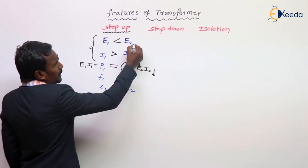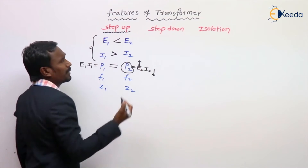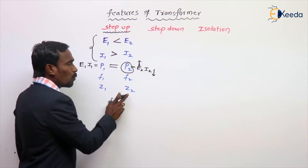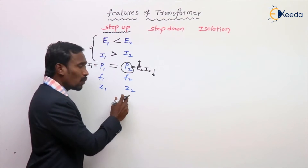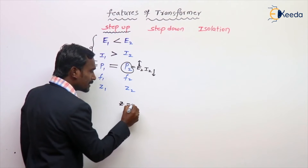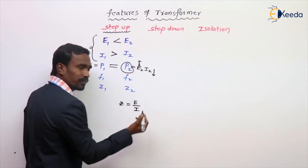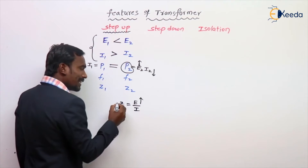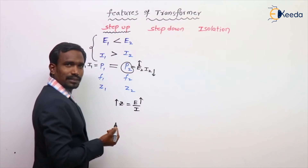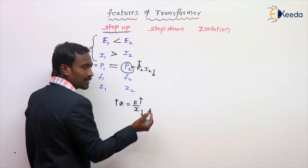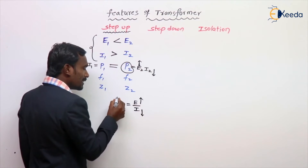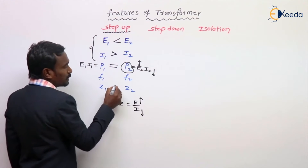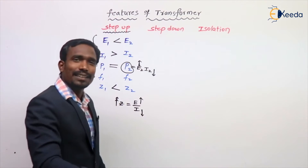In a step-up transformer, E2 is maximum and I2 is minimum. Voltage component is maximum, current component is minimum. What about impedance? Generally, impedance equals E divided by I. Here, EMF value increases, so impedance also increases. But the current value decreases, and when current decreases, impedance increases further.